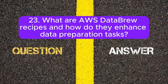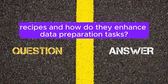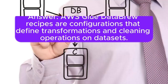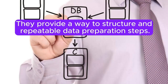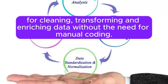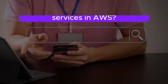23. What are AWS DataBrew recipes and how do they enhance data preparation tasks? Answer: AWS Glue DataBrew recipes are configurations that define transformations and cleaning operations on datasets. They provide a way to structure repeatable data preparation steps. DataBrew recipes enhance data preparation tasks by allowing users to create reusable recipes for cleaning, transforming, and enriching data without the need for manual coding.